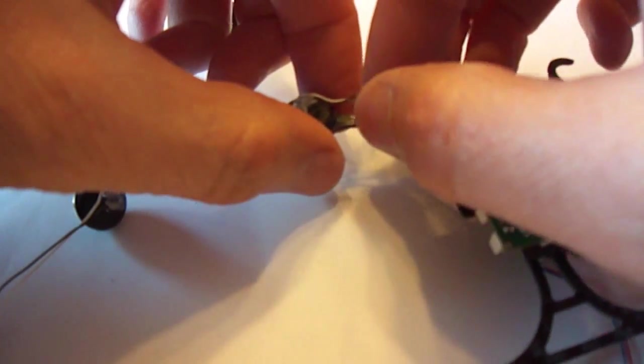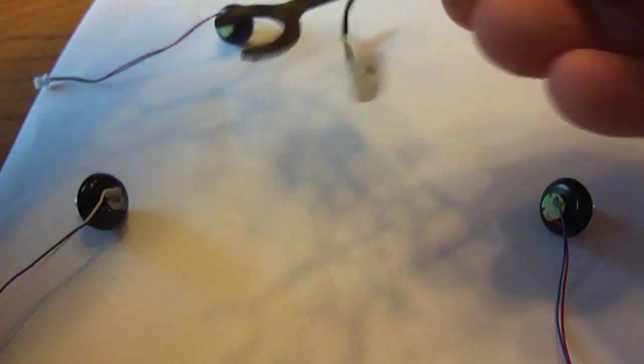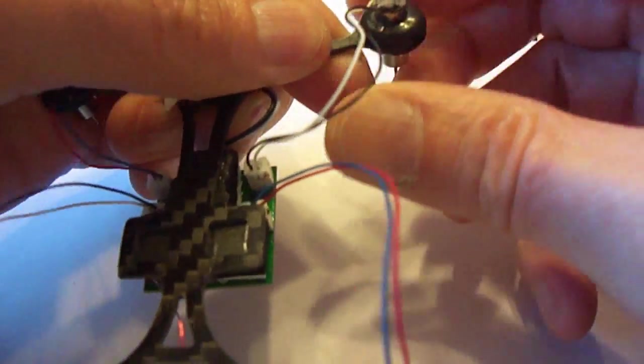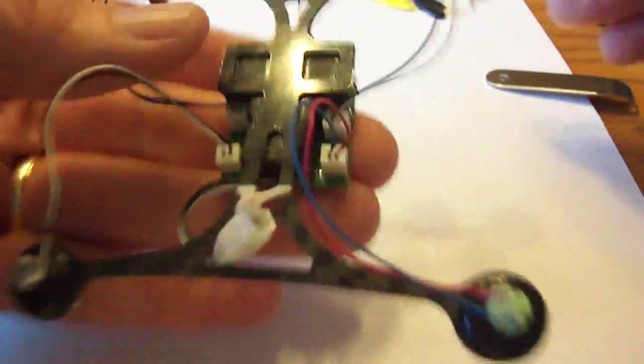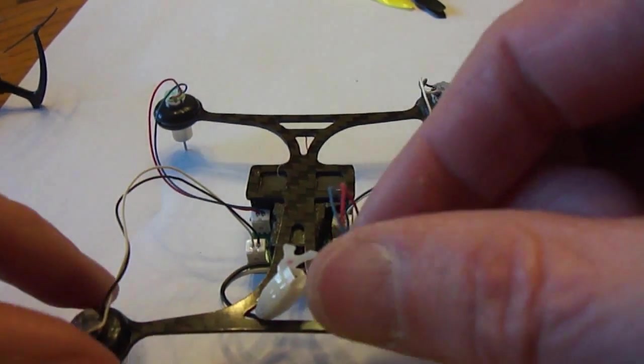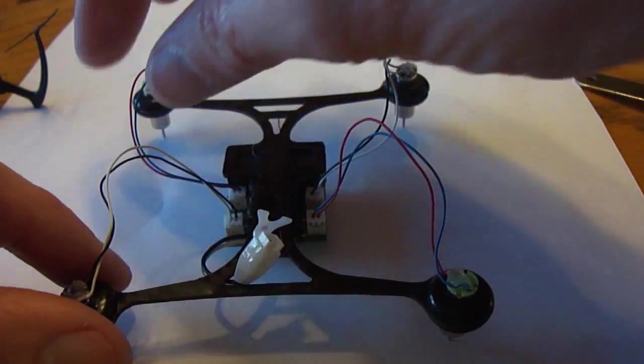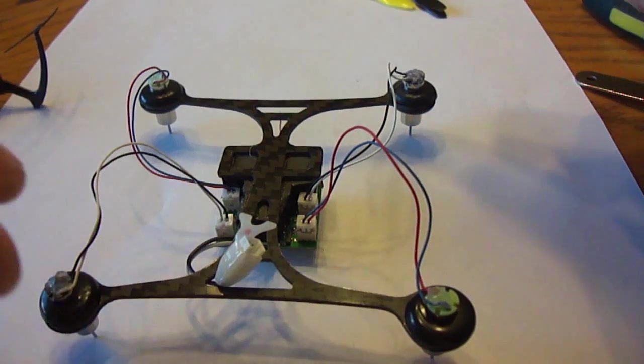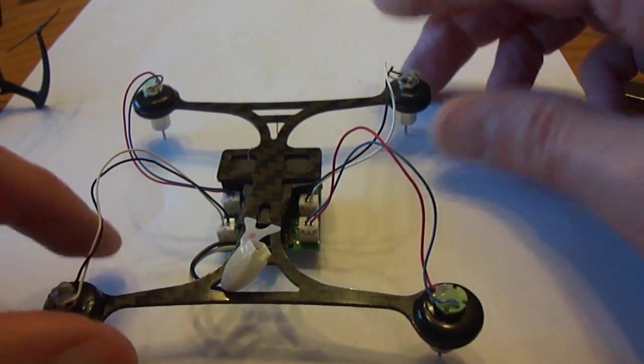When you are putting these on, make sure that the wires kind of line up with the arms. It is so easy to break these little wires if you are not careful what you do here. Okay, so I have got the motors on, looking still from the bottom. Red and blue clockwise, red and blue clockwise, black and white counter clockwise, black and white counter clockwise. Now when we flip this around, that is the front.